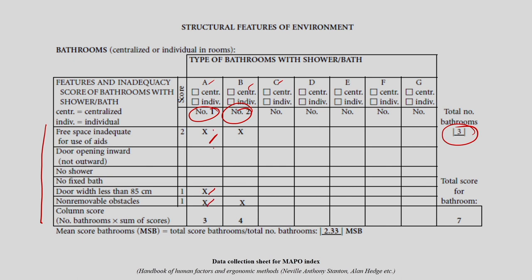Category 1 has 3 issues, so 3×1 bathroom = score of 3. Category 2 has 2 issues (1+1=2), multiplied by 2 bathrooms = score of 4. Total bathroom score is 3+4=7. Mean bathroom score: 7 divided by total 3 bathrooms = 2.33. Similarly, we need to calculate the toilet score.